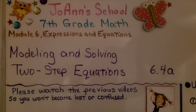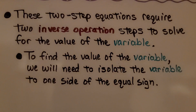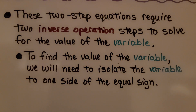We're now at Lesson 6.4a, and this is Modeling and Solving Two-Step Equations. These two-step equations require two inverse operation steps to solve for the value of the variable. To find the value of the variable, we need to isolate the variable to one side of the equal sign, one side of the equation.